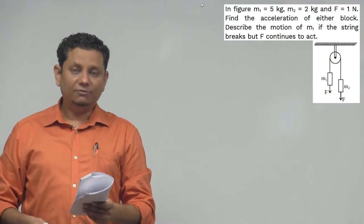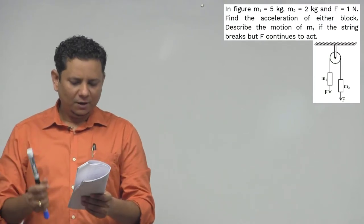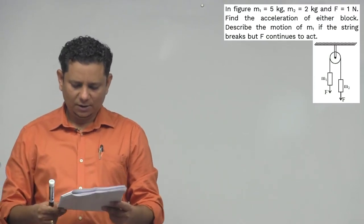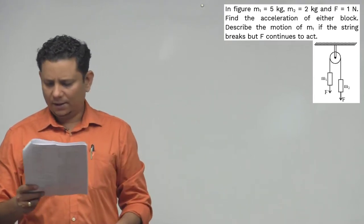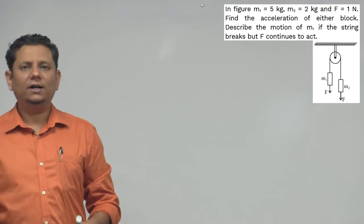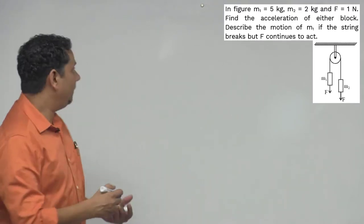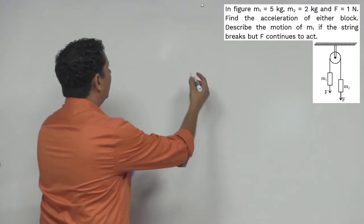Our next question says: in figure m1 is equal to 5 kg, m2 is equal to 2 kg, and F is equal to 1 Newton. Find the acceleration of either block. Second part of the question: describe the motion of mass m1 if the string breaks but F continues to act. Now simple, so we have to solve.